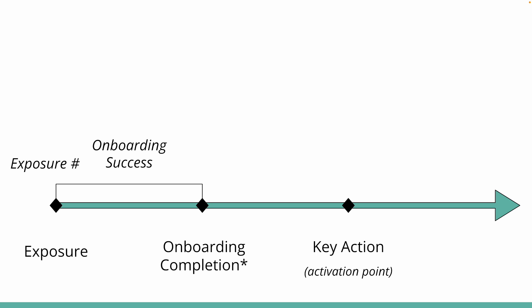The third metric is the activation rate. This metric looks at the conversion rate from onboarding completion to when the user takes a key action — the number of users who activated divided by the number who completed onboarding. If your product doesn't have onboarding, you can define it as the number of people who activated divided by those who were exposed to the product. Either way, the fundamental approach is the same: you're looking at the conversion rate from the previous key point of the journey to this one.